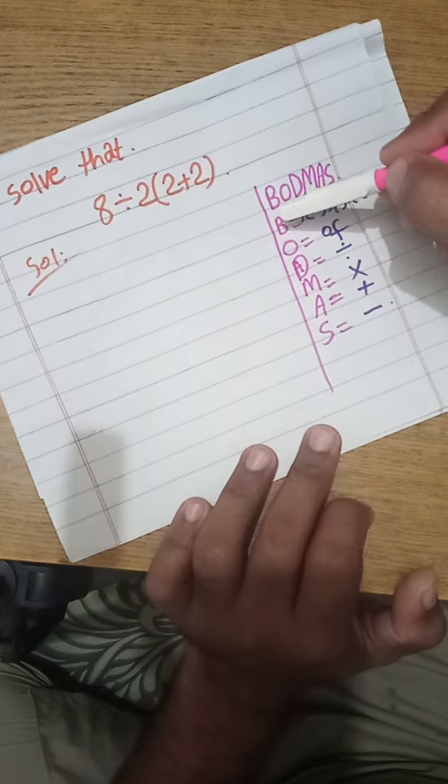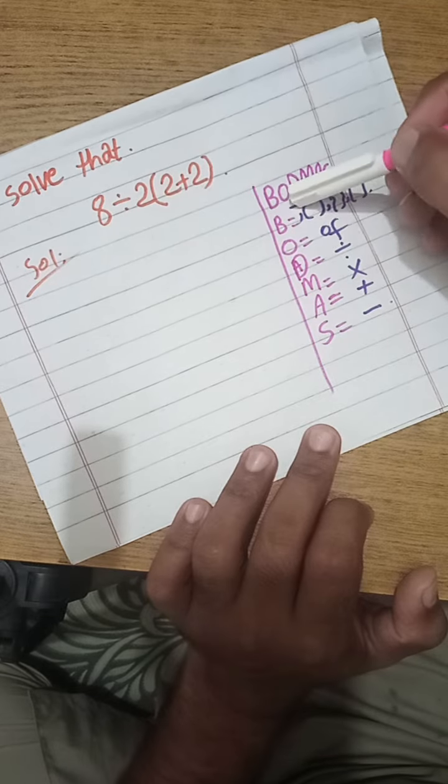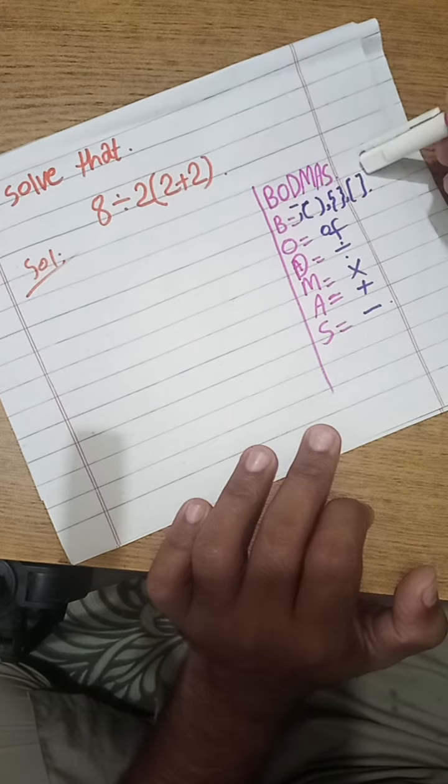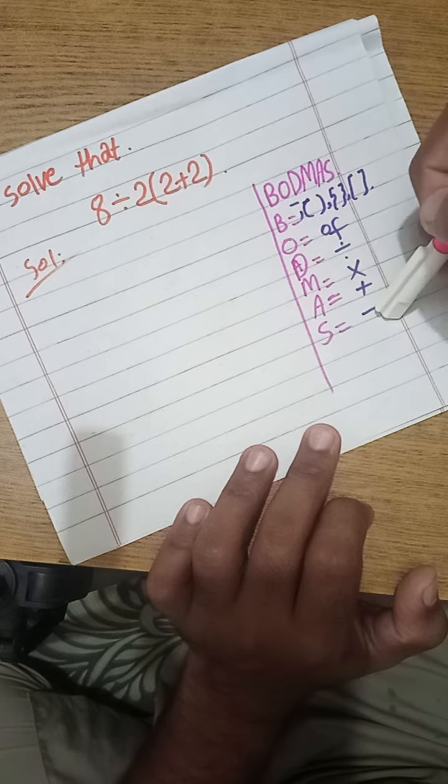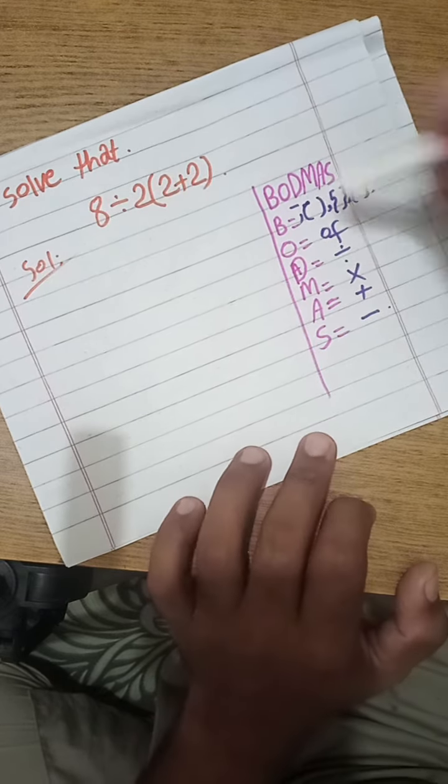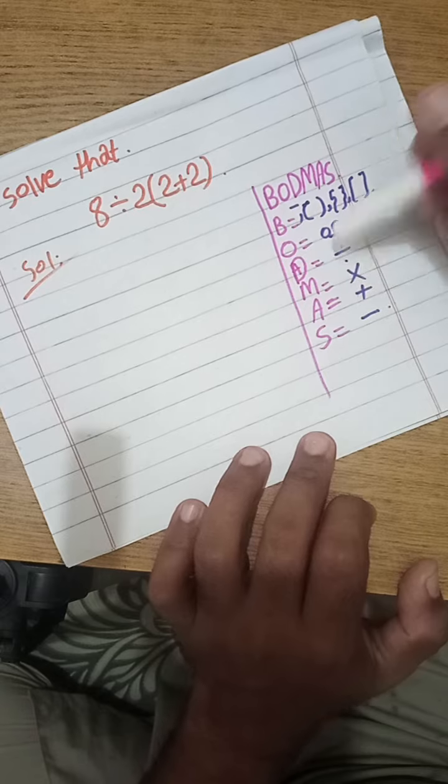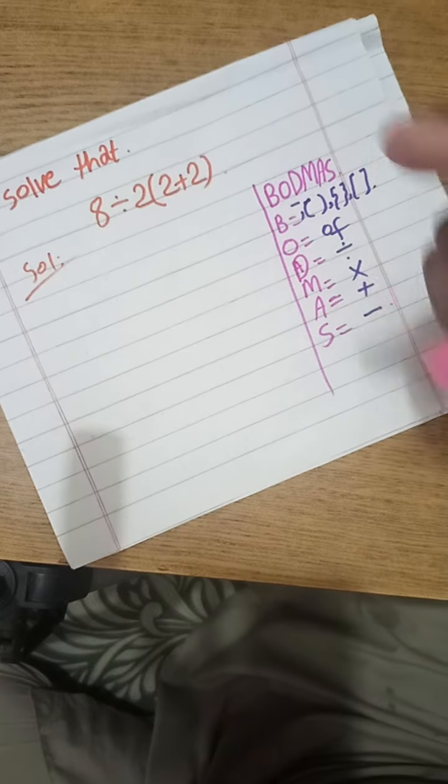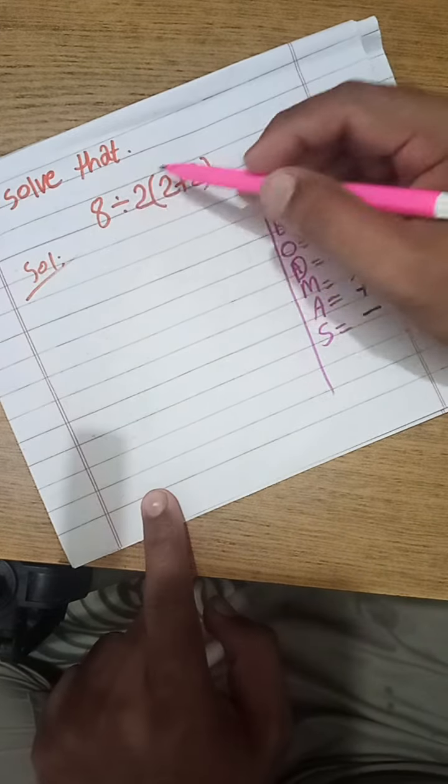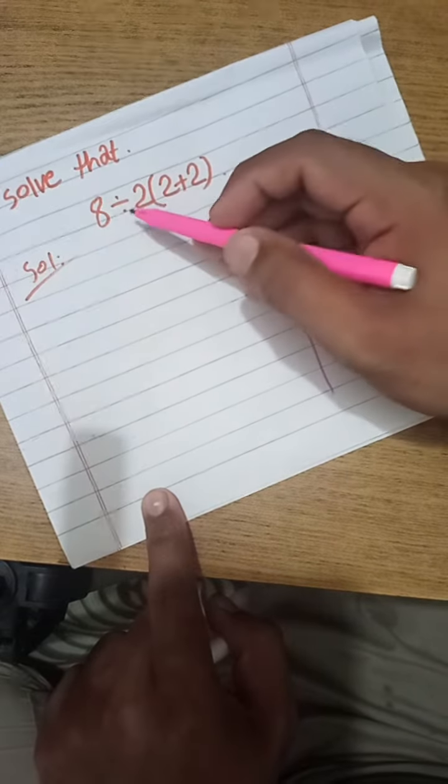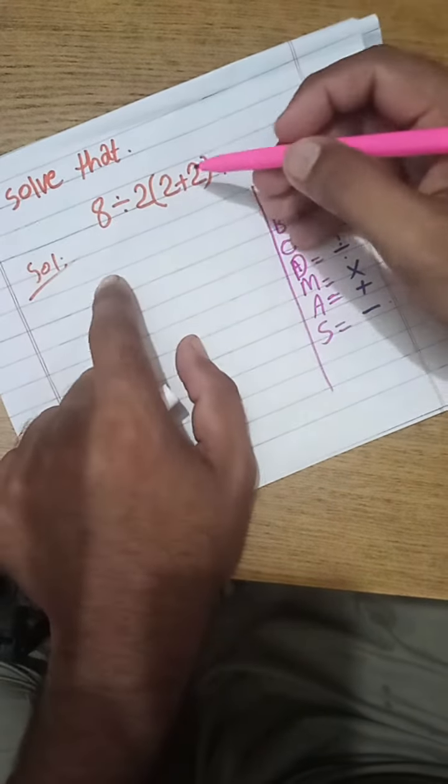BODMAS rule says that first of all open solve the bracket, bar, curly, scale of division, multiplication, addition, and subtraction. These rules BODMAS gives us. This rule, another important thing: we follow the BODMAS rule to solve this.